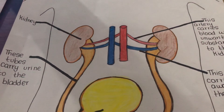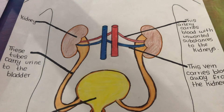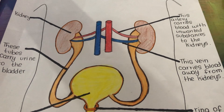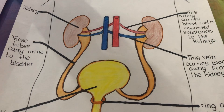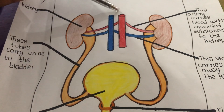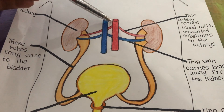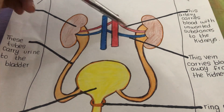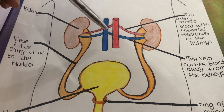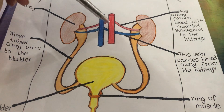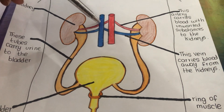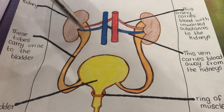The kidney is the basic fundamental part in the formation of urine. There are arteries — this particular artery over here basically carries blood with unwanted substances to the kidney. This is a vein, and this is an artery; this vein carries blood away from the kidney.